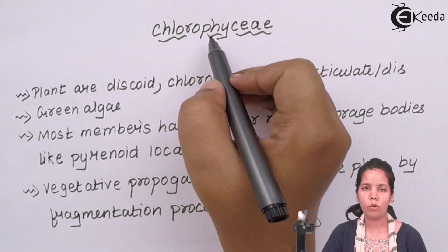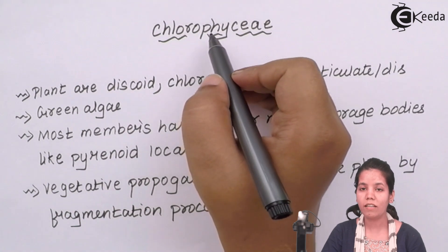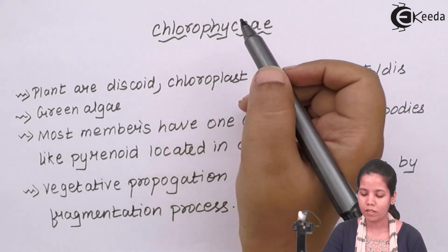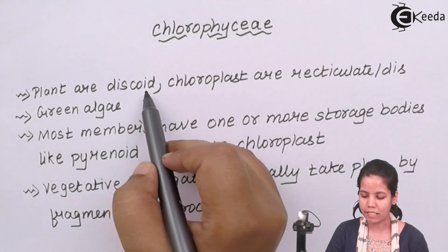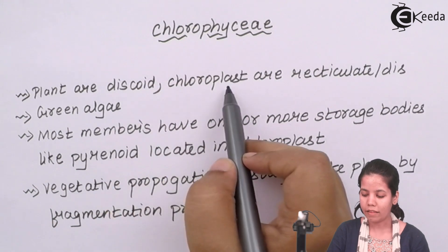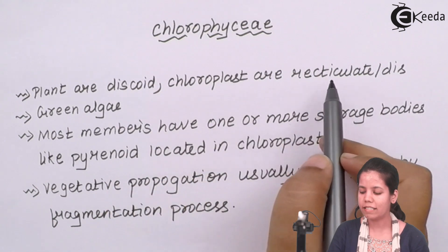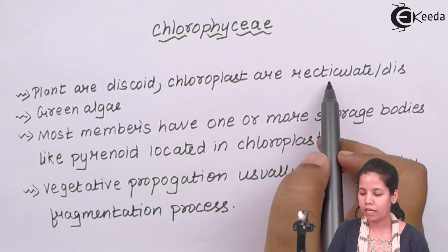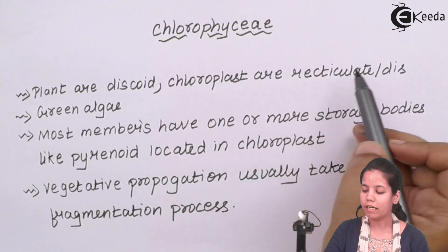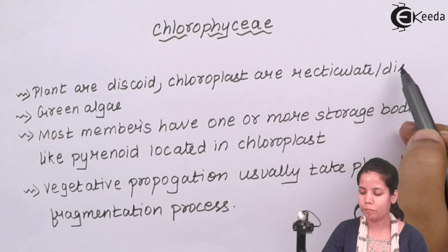Chlorophyceae, or green algae — these are plants which are discoid in shape, and the chloroplasts that they contain are reticulate, or you can say disc-shaped.